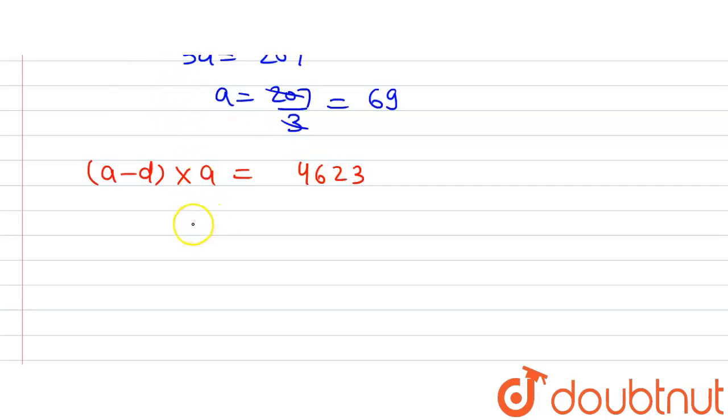Now, let's solve this because A we have already found out and A is 69. So putting the value of A as 69, 69 minus D multiplied by 69 is equal to 4623. The 69 will go and divide 4623 and here we will have 69 minus D.